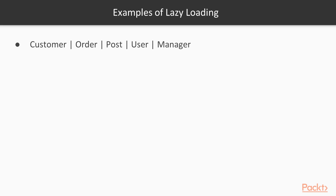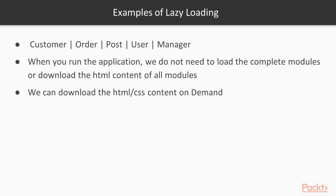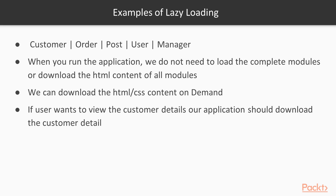Here is an example. We have customer, order, post, user, and manager links in an Angular application, and we have divided the application into these five modules. When I load the application, I don't need to fetch all the contents of all modules at once — I can implement lazy loading. When the user wants to view the order details, we download the contents of the order module. If the user wants to view user details, then we download the contents of the user module.